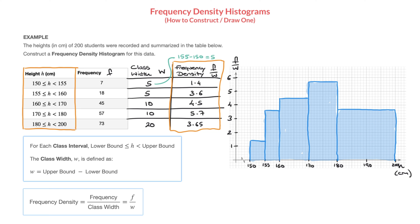There are a couple of things worth pointing out. First, in a frequency density histogram, the rectangles are all touching — there's no gap between them, and that should always be the case. The fact that these rectangles touch tells us we're dealing with continuous data and highlights that this is not a bar chart, but a histogram — more specifically, a frequency density histogram.